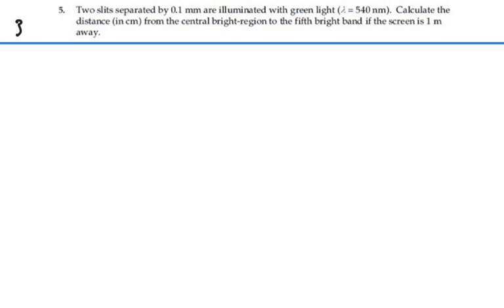Here's problem 37.5. Two slits separated by 0.1 millimeters are illuminated by green light wavelength 540 nanometers. Calculate the distance in centimeters from the central bright region to the fifth bright band if the screen is one meter away.